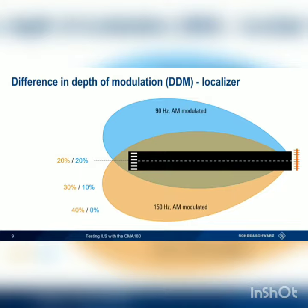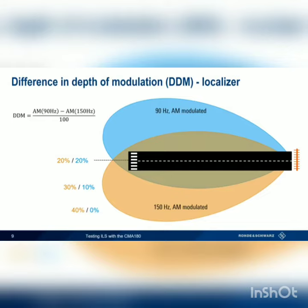The localizer determines position deviation from the centerline by using the difference in the depth of modulation between these two lobes. Mathematically, the difference in depth of modulation is the measured 90 Hz AM modulation depth minus the measured 150 Hz AM modulation depth, divided by 100.